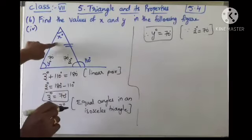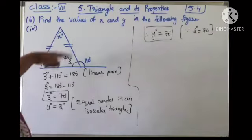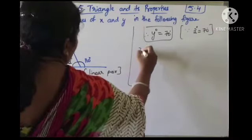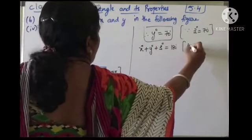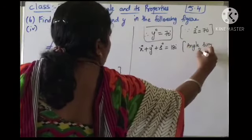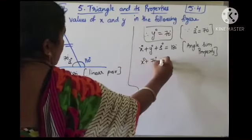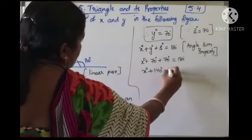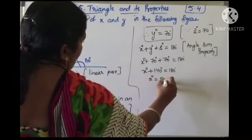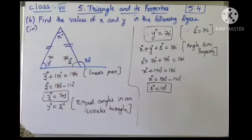Now we need to find x. Using the angle sum property: x degrees plus y degrees plus z degrees equals 180. x is unknown, y is 70, z is 70. So x plus 70 plus 70 — that is 140 — equals 180. x equals 180 minus 140, which is 40 degrees. Finally, x is 40, y is 70, and z is 70.